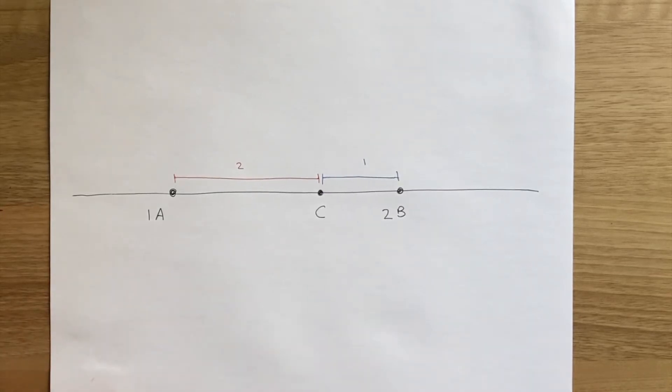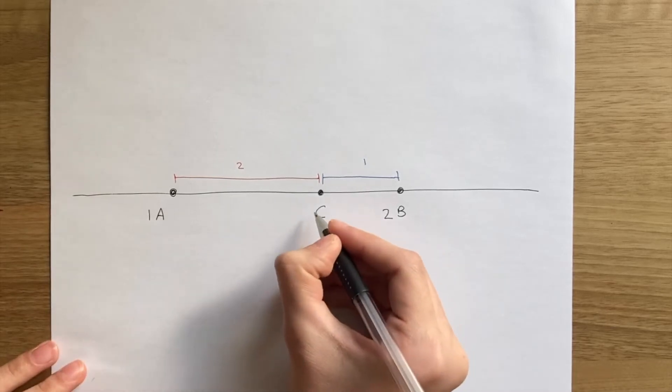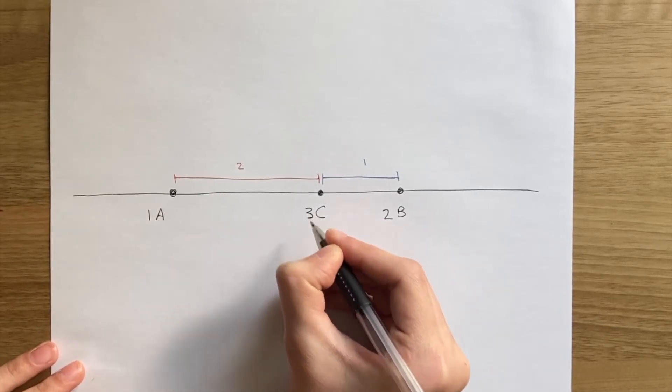Now, if we think of C as the sum of A and B, C should have a mass that's the sum of A and B masses. So C has a mass of 3.